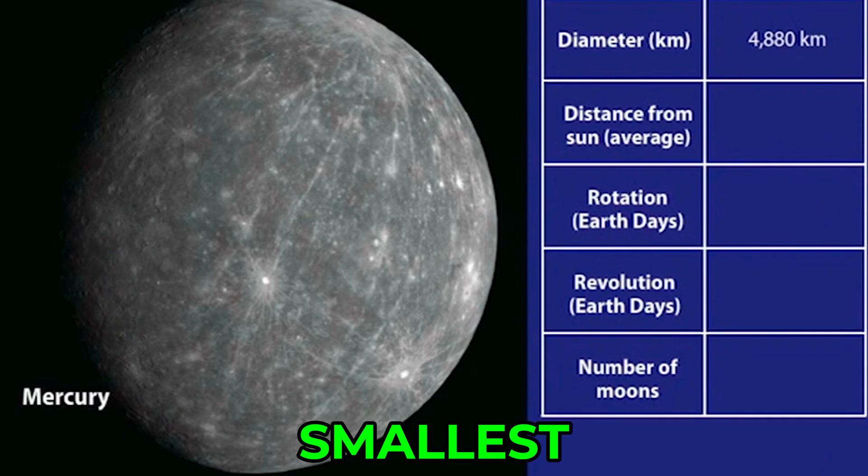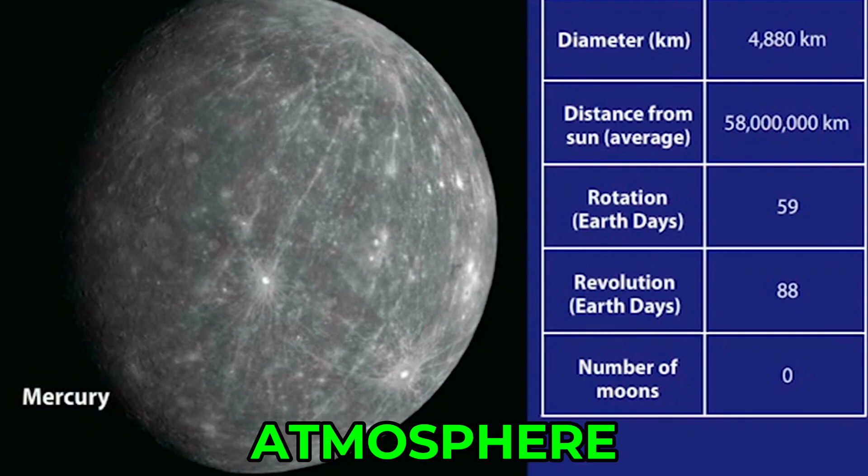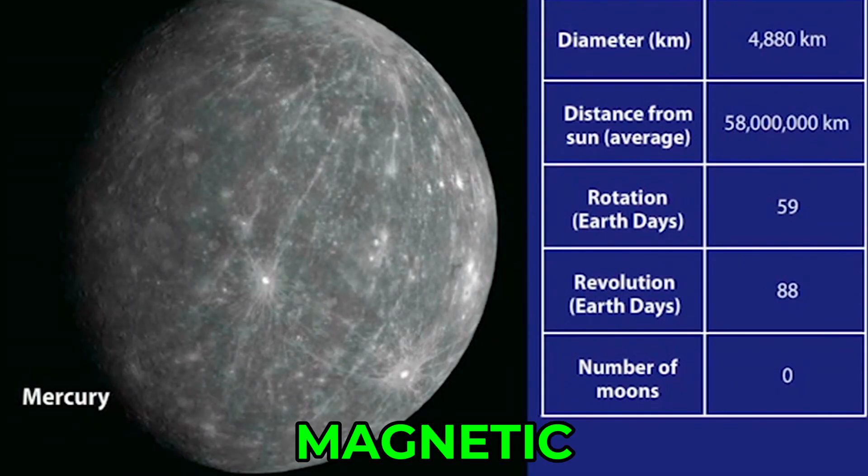Mercury is the smallest planet, located closest to the Sun. Mercury revolves on its axis very slowly. A single Mercury day is about 59 Earth days long. Mercury does not have any moons or atmosphere. Its surface is covered with craters. A magnetic field suggests that it has an iron core.